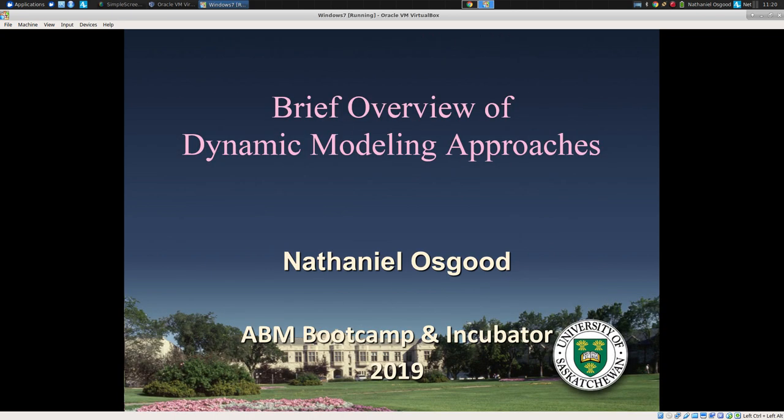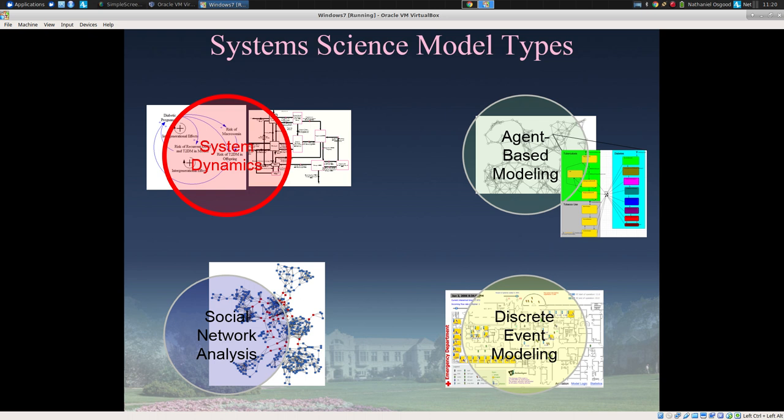These three major traditions within system science go by different names and have different sub-variants. We will be hitting respectively on system dynamics modeling, agent-based modeling, and discrete event modeling within this discussion, bearing in mind that there are cognate traditions which use mathematically and formulaically similar mechanisms — they use similar formalisms to depict the system but will go by different names.